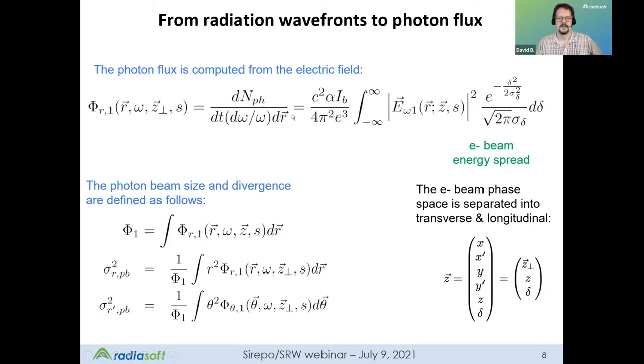And the integral looks like this, where you take the norm of the electric field from our calculation on the previous slide. And if you want to include the energy distribution of the electron beam, the energy spread, and you assume it's a Gaussian, you would throw in this factor and do a convolution in your integral over that distribution in electron energies. And then you have some standard physical factors out front. The peak current of the beam, the parameter alpha is 1 over 137, speed of light, charge of the electron. And what you get is the number of photons emitted per unit time, per unit frequency interval, and then per volume. So the photon beam size and divergence are also very important quantities in addition to the flux.